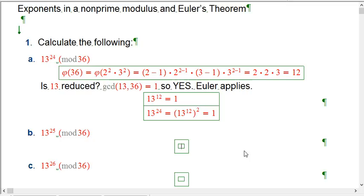The next one, 13 to the 25th mod 36, if you've already done 13 to the 24th, don't do it from scratch. So 13 to the 25th is going to be 13 to the 24th times 13, and so we just get 1 times 13 is 13. Notice I'm dropping the bars and the triple equal signs, all these things are in mod 36, but just to make it speedier I'm not going to write that.